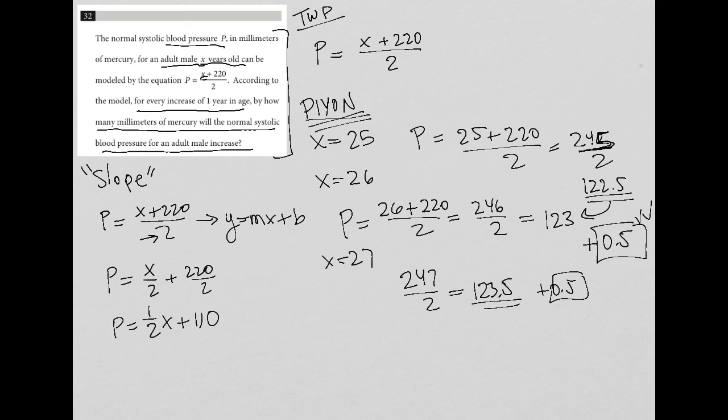And because this is in the form y equals mx plus b, and because the question is asking for m, I would be able to tell you that the slope or the difference, the change in blood pressure per year must be one half. So that same 0.5 is what I'd get.